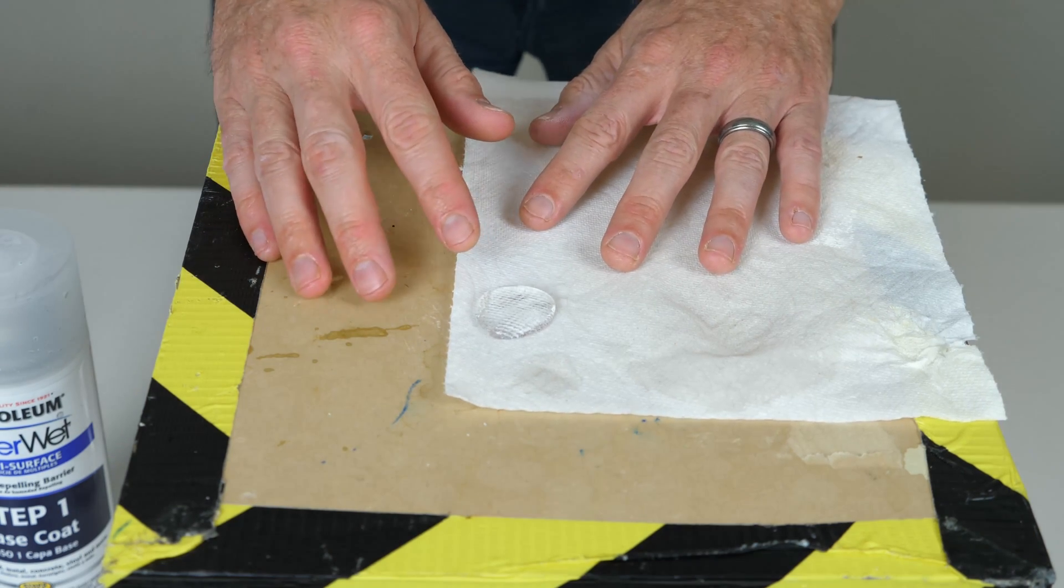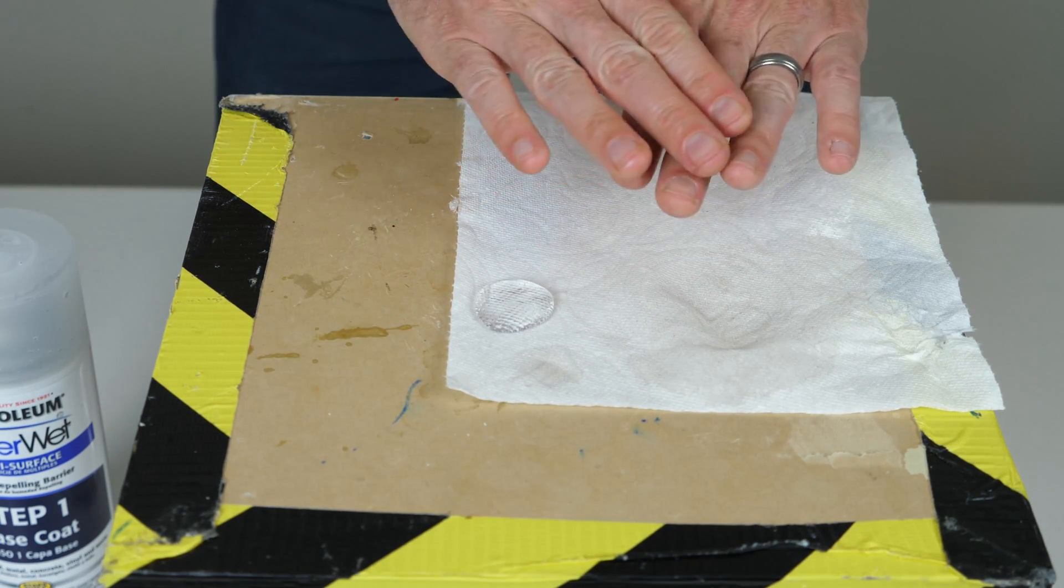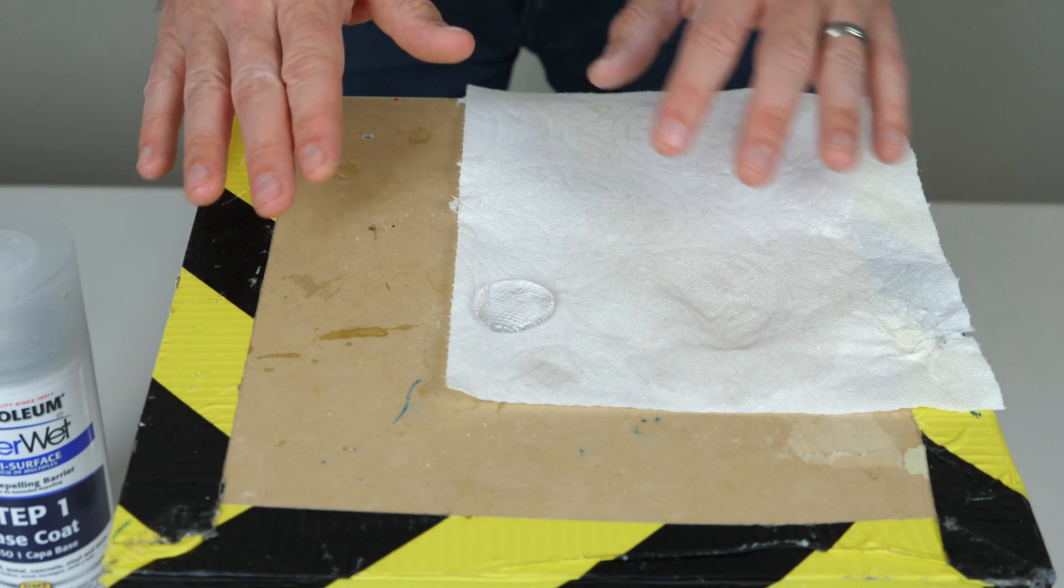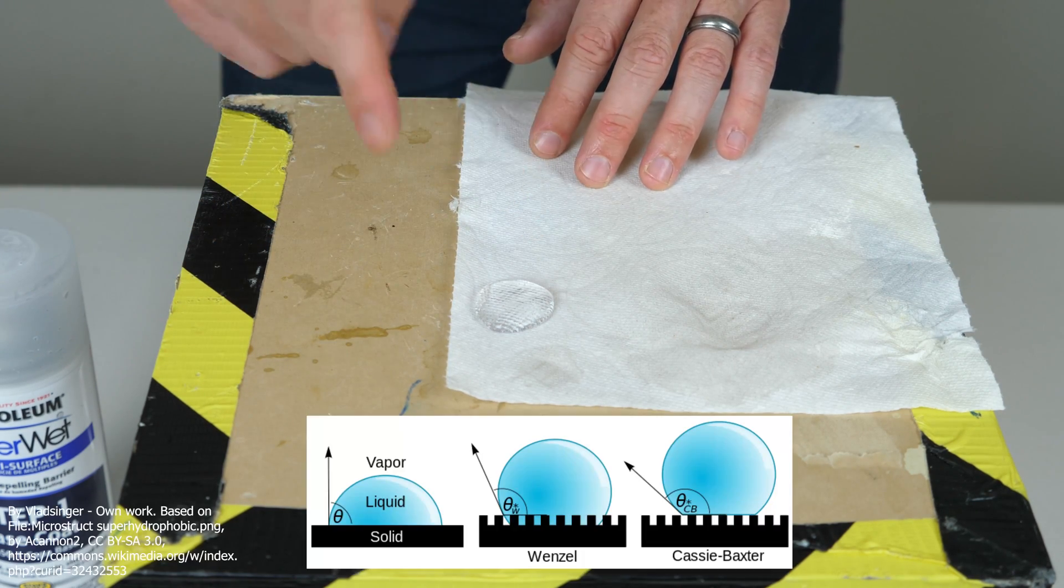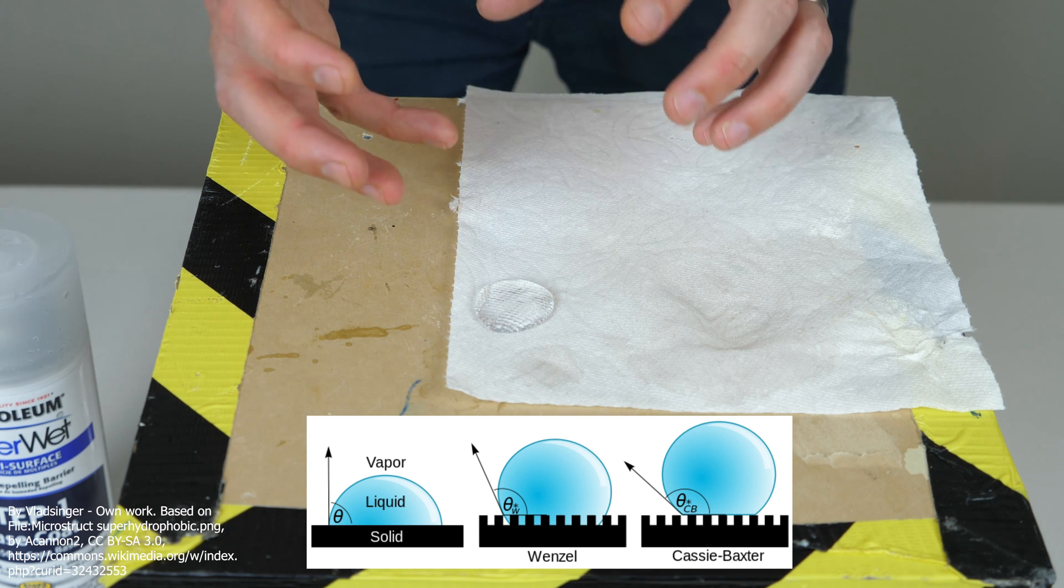And what's interesting is what makes surfaces even more hydrophobic is not only if they have a hydrophobic molecule on top of it, but also if there's little tiny bumps on it that keeps air trapped underneath. That makes it super hydrophobic.